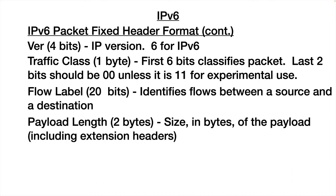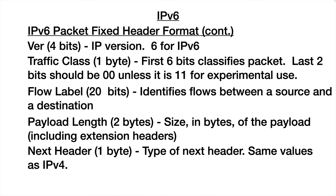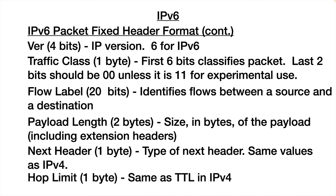The next field is the payload length — the size in bytes of the payload, including extension headers, which we'll talk about in a moment. We have the next header field, which is one byte that tells us what comes next — the same as in IPv4 where a value identified the header or protocol type. The hop limit is basically the same as the time to live in IPv4: a value decremented every time you pass through a router, and if it reaches zero, the packet is discarded. So that is an introduction to IP version 6.